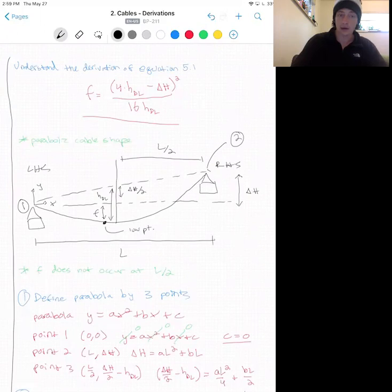Point 2 will be the right-hand side abutment defined by x equals L and y equals delta H. And point 3 will be the midpoint where x equals L over 2 and y equals delta H over 2 minus the dead load sag.